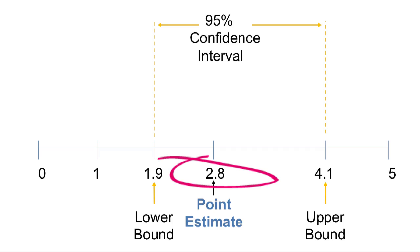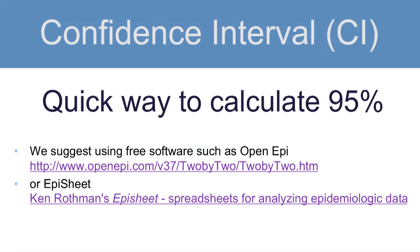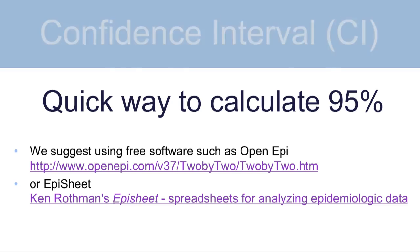Here's an important point to remember: the measure of association or point estimate — i.e., the risk ratio, odds ratio, etc. — will always be somewhere between your upper and lower confidence interval bounds. If it isn't, this is a good indicator that something went wrong in your calculation. For beginning epidemiology students, there is free software available to calculate 95% confidence intervals, including OpenEpi and EpiSheet. Using either of these spreadsheets, you can plug in the numbers for each of the four cells in a 2x2 table, and they will calculate the standard error and the related 95% confidence intervals.